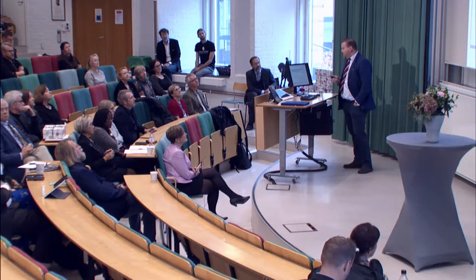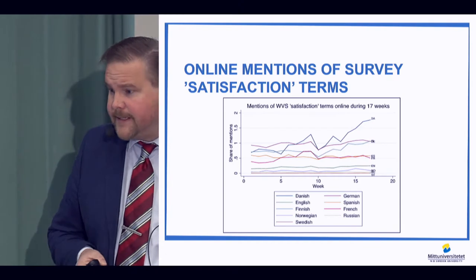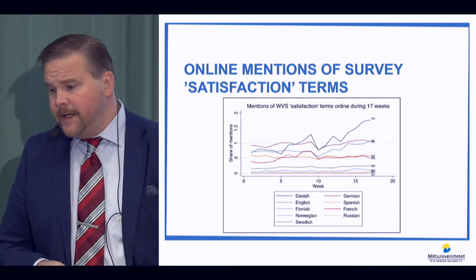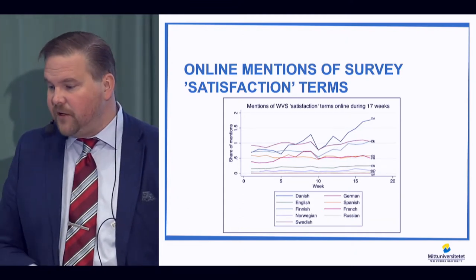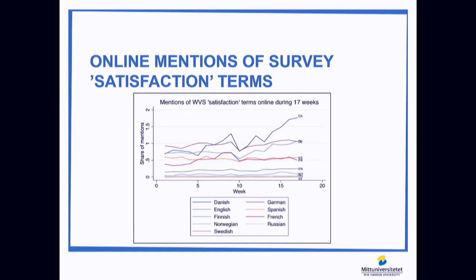If we look at just frequency and take the translated terms from the surveys, starting with satisfaction, we see that the Danish term is at the top — it's increasing for reasons I don't know, but it's kind of stable over time. The Danish 'tillfreds' is by far the most frequently used, while English, Norwegian, and Swedish are at the bottom. This corresponds to what we saw in the survey experiments: there was no difference between 'satisfied' and 'nöjd,' but between 'satisfied' and 'tillfreds' it's a big difference.